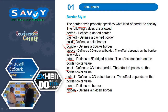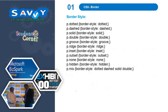So we need to use these things in our design. In this example we are using border style as: dotted, dashed, solid, double, groove, ridge, inset, outset, none, hidden. Combination of one or two: dotted, dashed, solid, double.